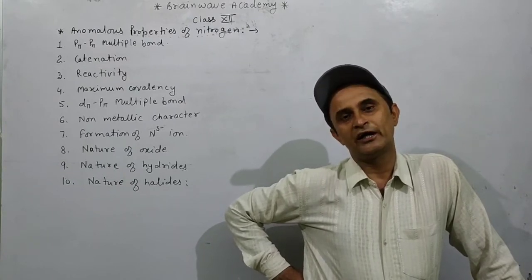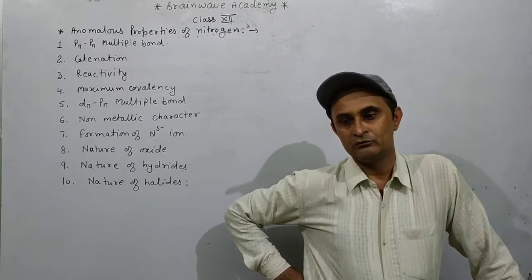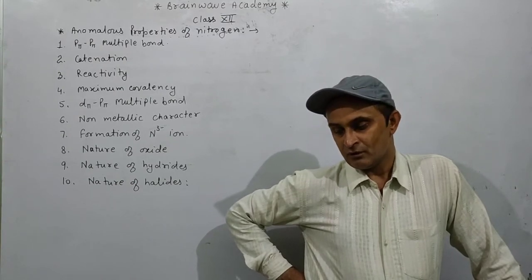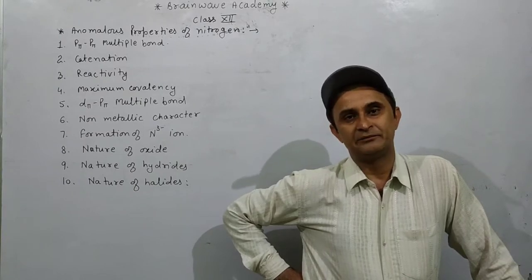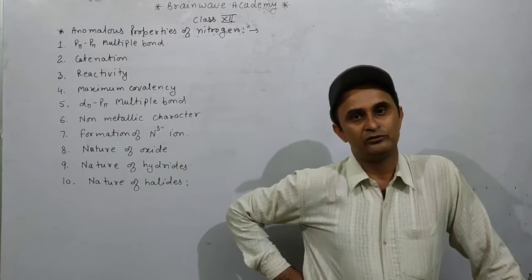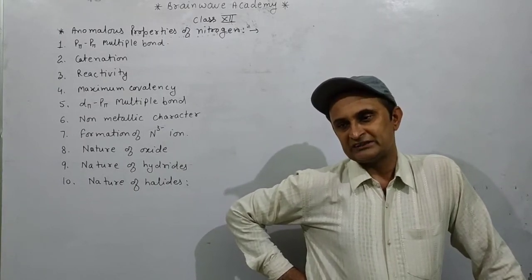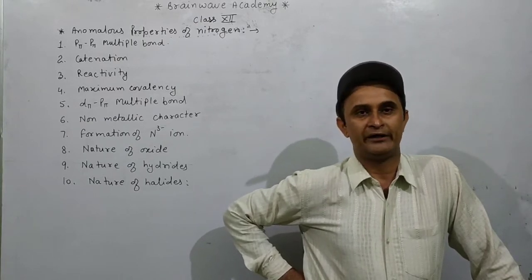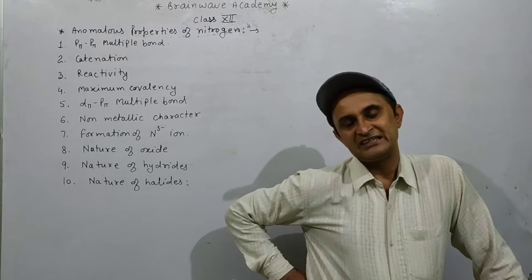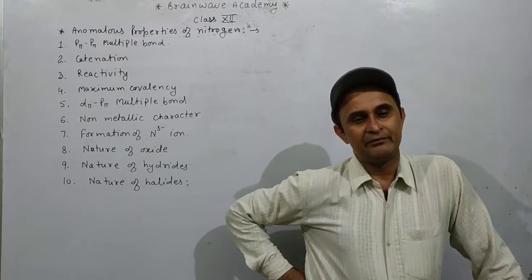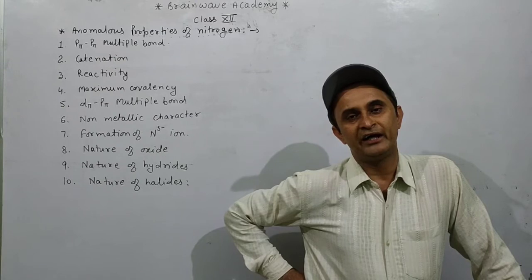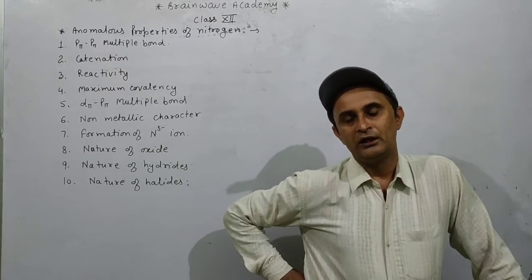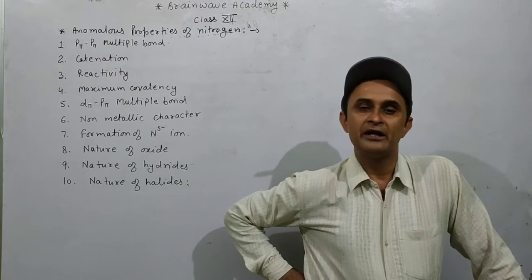There are four solid reasons. The first reason is that it has very small size. The first element of the group has very high electronegativity. The third reason is that the first element of each group has very high ionization enthalpy. And fourth, they have absence of d-orbital.